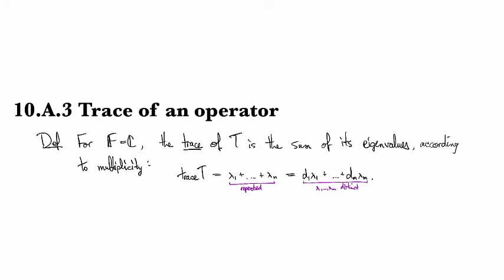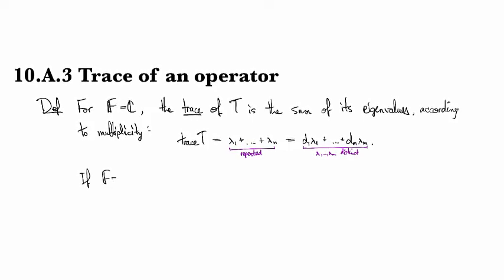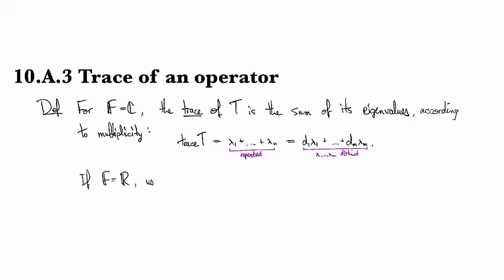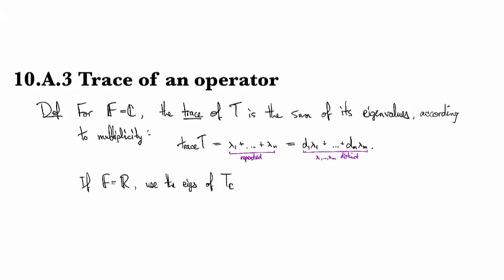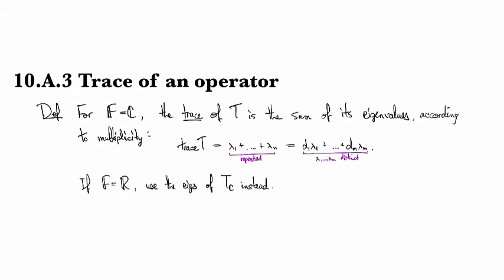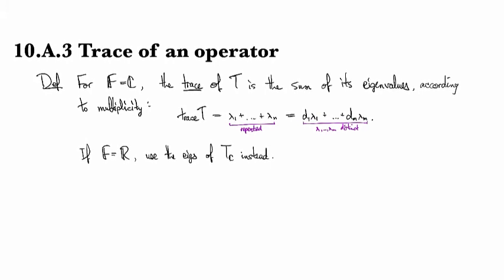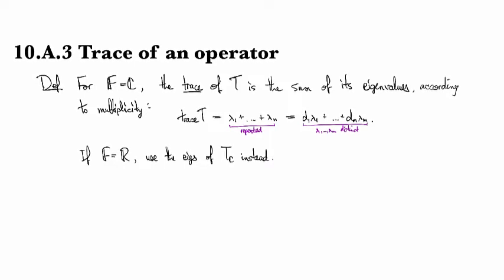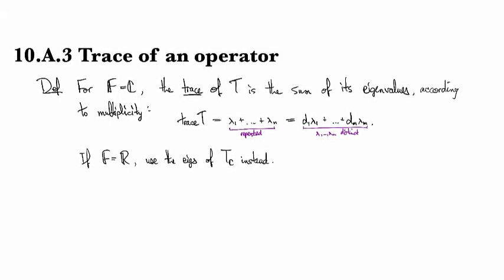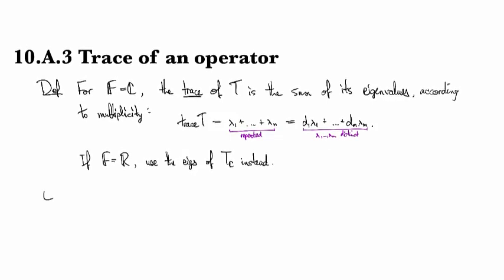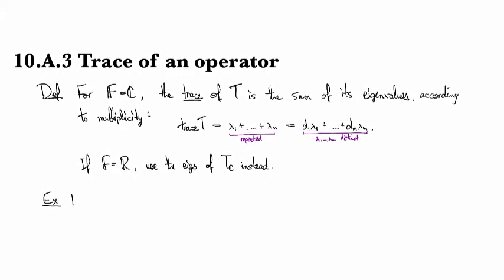That's how the trace is defined for an operator over a complex vector field. If you have a real vector field, you do the same thing but use the eigenvalues of the complexified transform instead. As we've discussed, the matrix of that complexified transform is just the exact same matrix.